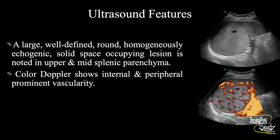In summary, a large well-defined round homogeneously echogenic solid space-occupying lesion is noted in the upper and mid splenic parenchyma. Color Doppler shows predominantly peripheral but also some internal vascularity. These features conclude this as a case of splenic hemangioma.